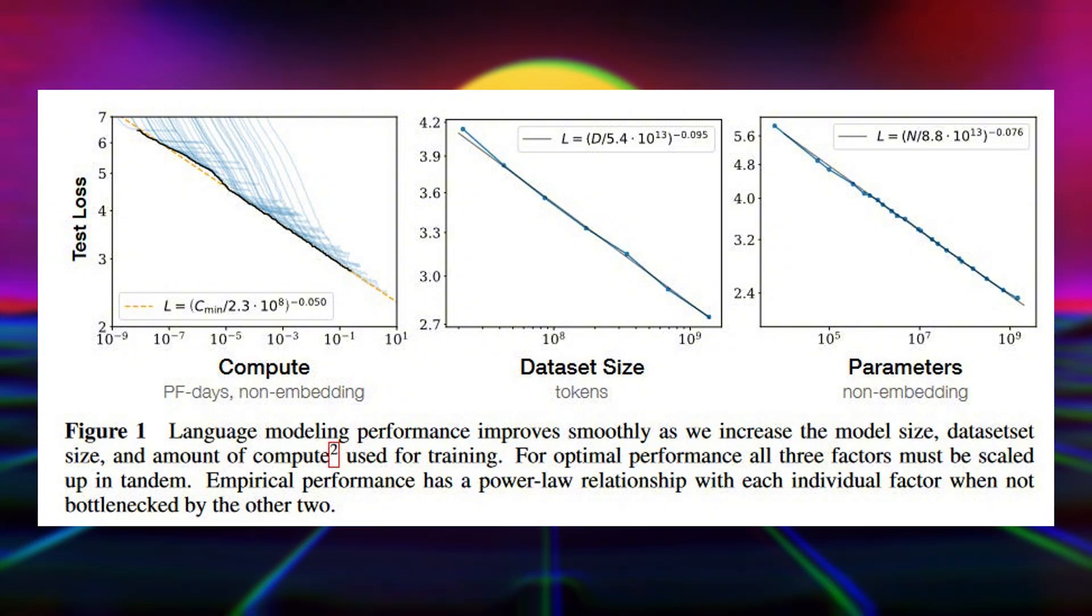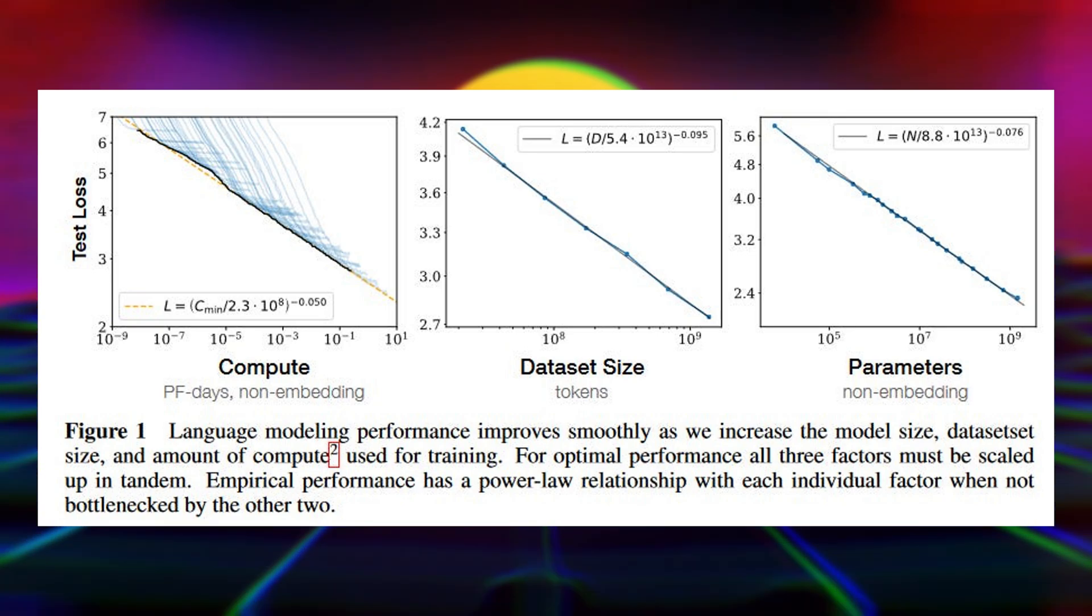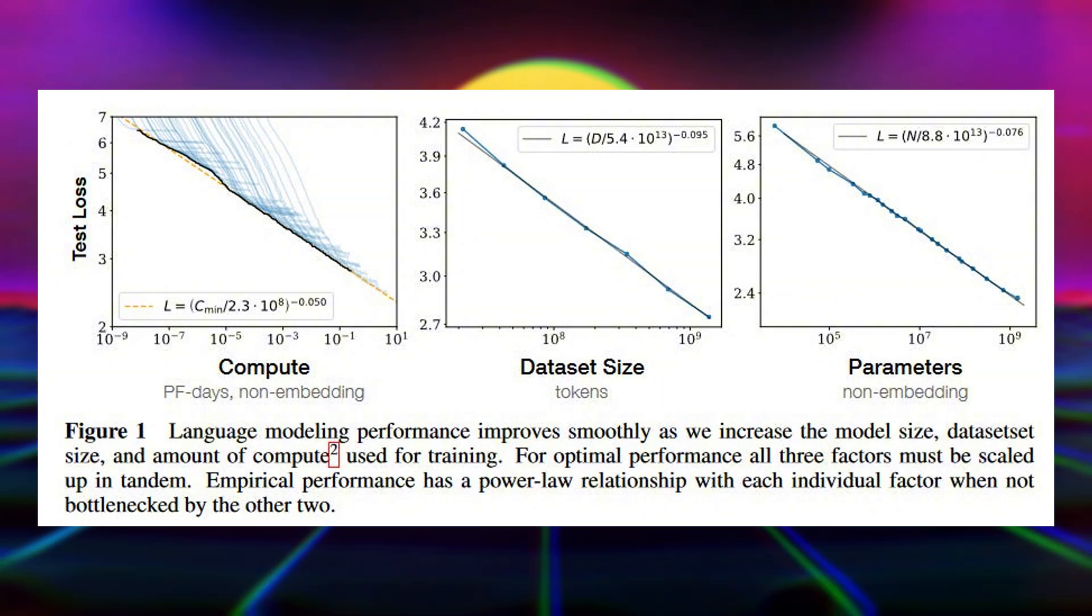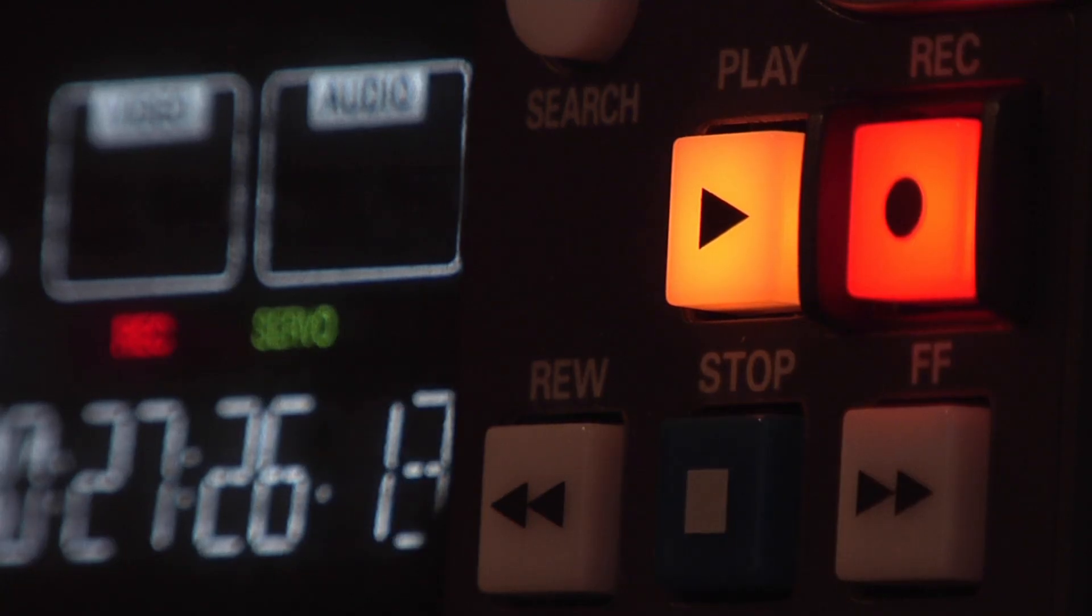The idea that many aspects of intelligence might emerge spontaneously from neural networks as they scale up, much like consciousness emerged from increasingly complex brains through evolution.